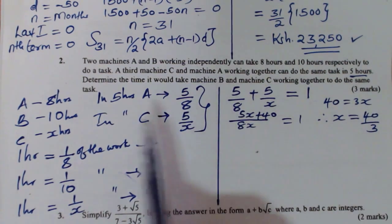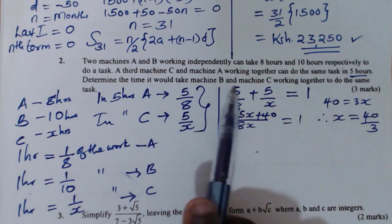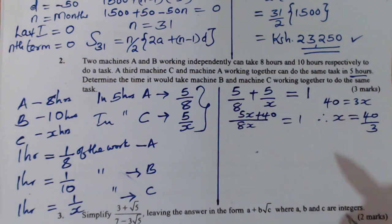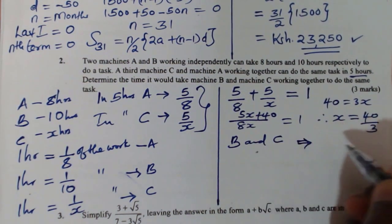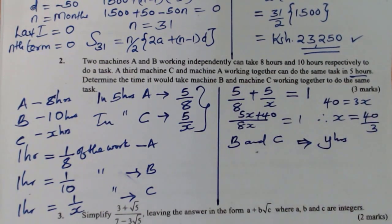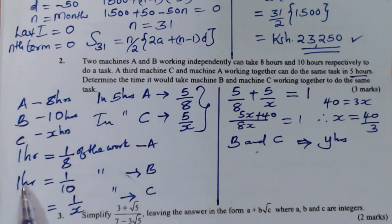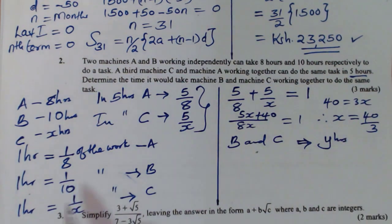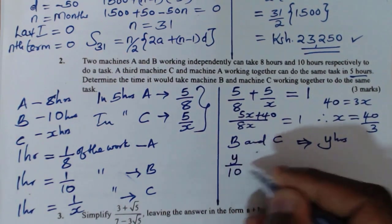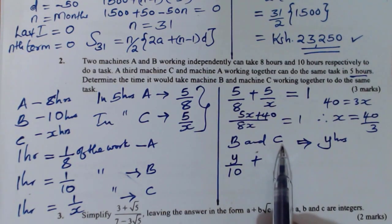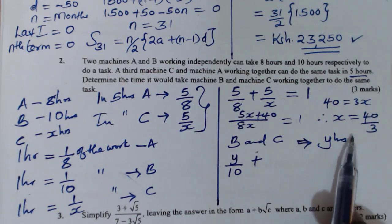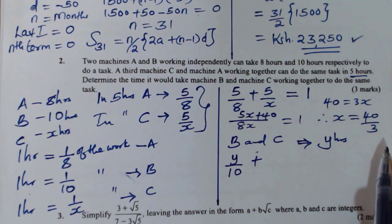Now having done that, look at the next statement: determine the time it will take machine B and C working together to do the same job. We assume machine B and C will take Y hours to complete the work. Since B takes 10 hours, in one hour B will do one over ten of the work. In Y hours, B will do Y over ten of the work.